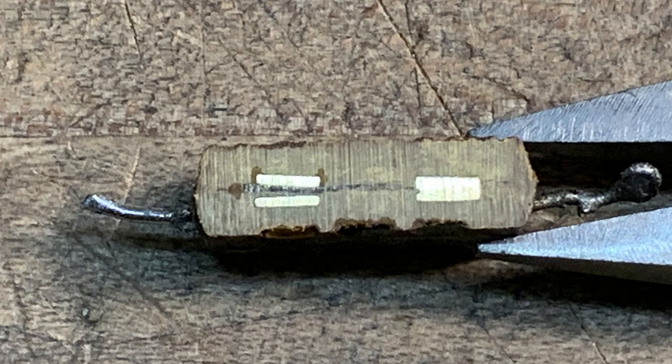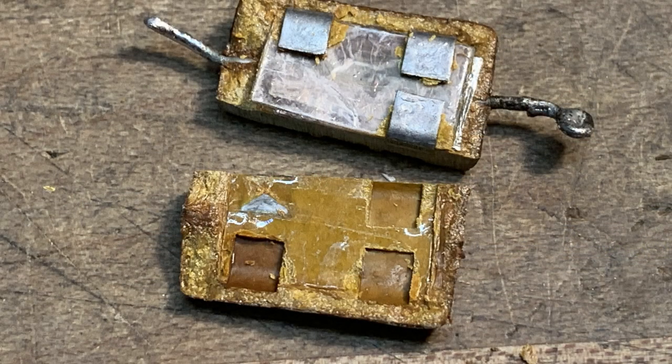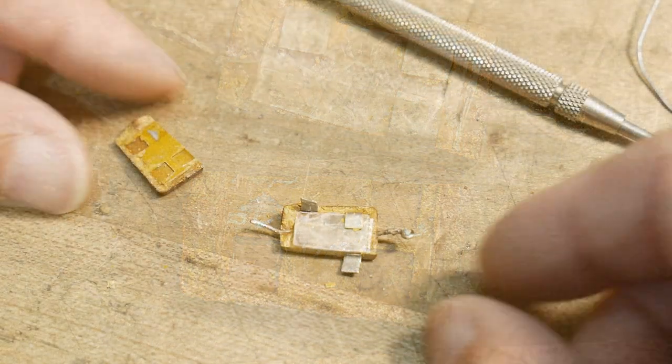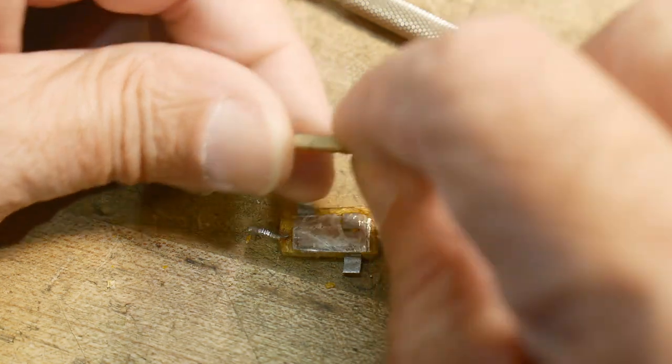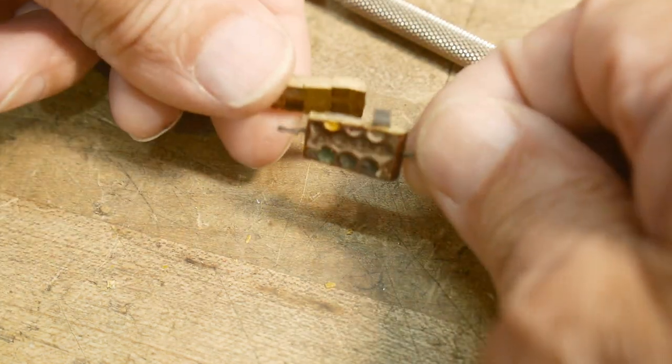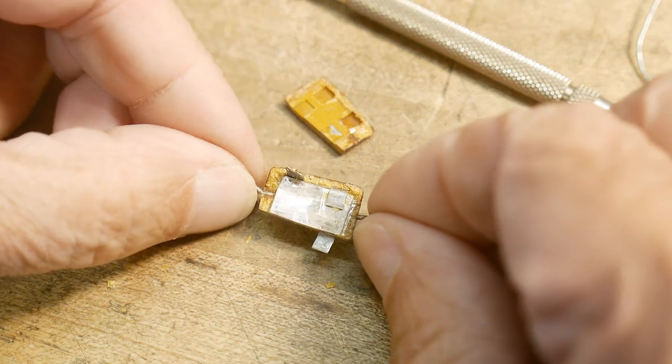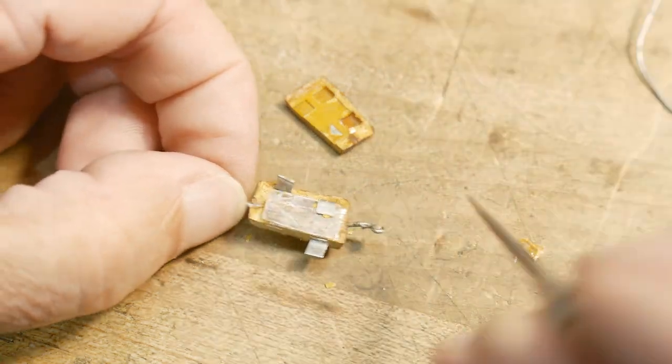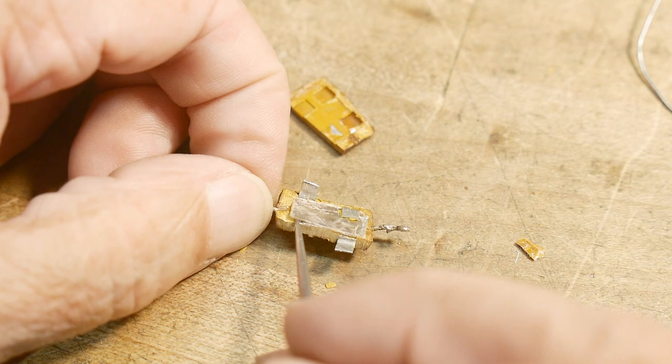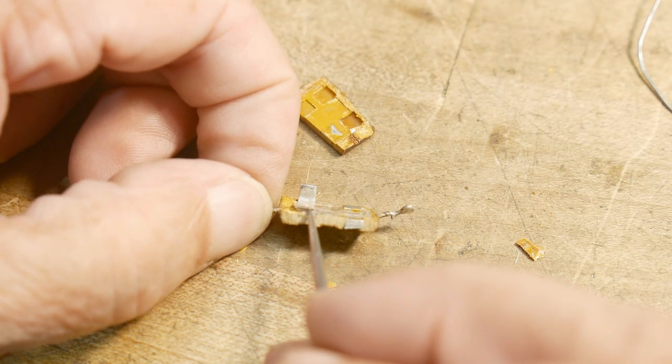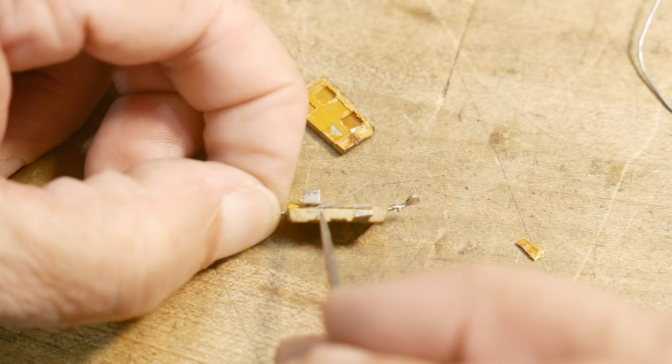Once I got it ground down, I was able to split it in half. You can see this went on top and it cracked in half, exposing the mica. You can see it here starting to lift up.